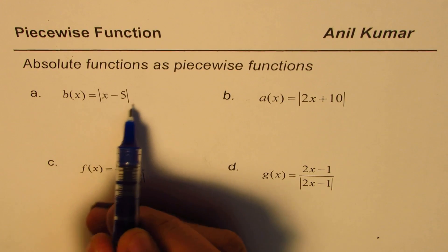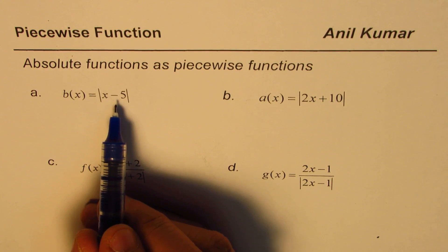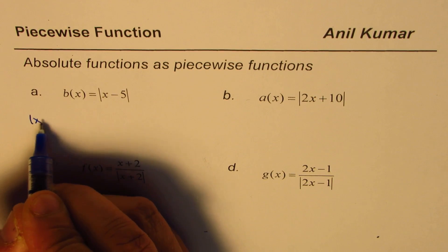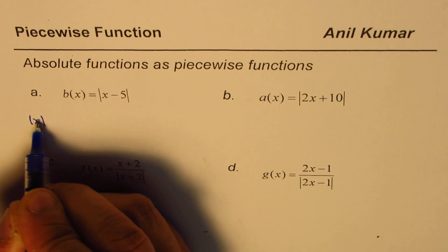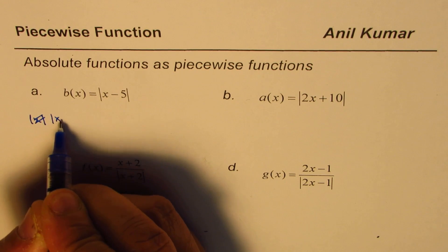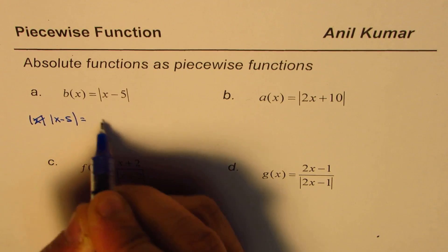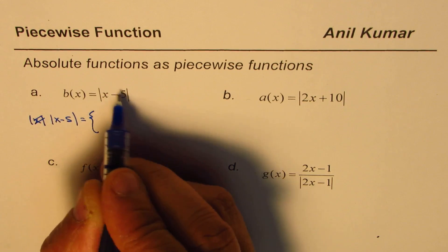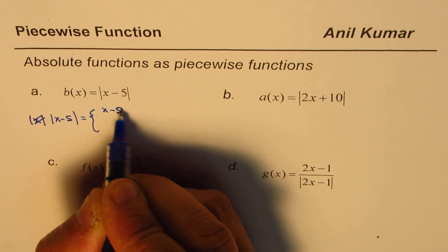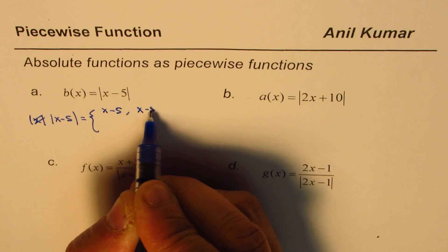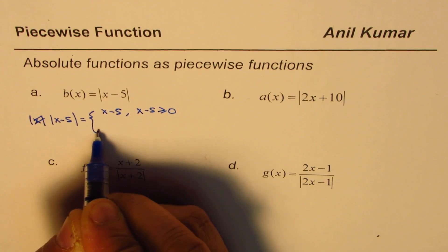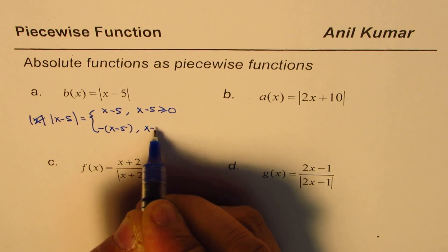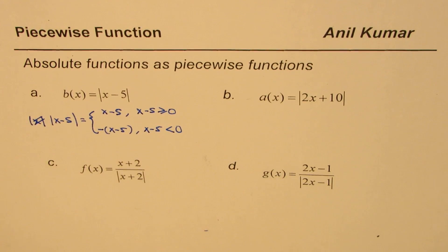Now as you know absolute value always returns a positive value. So basically absolute function will be defined: absolute value of x minus 5 will be defined as equal to x minus 5 when x minus 5 is greater than equal to 0 and minus of x minus 5 when x minus 5 is less than 0.